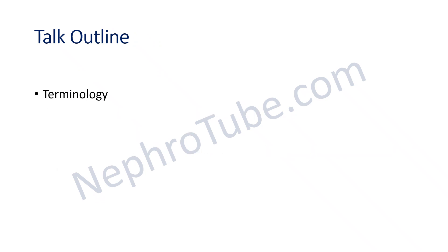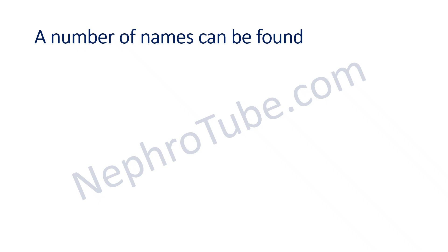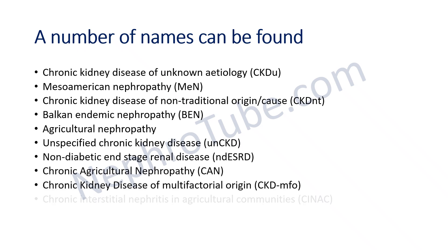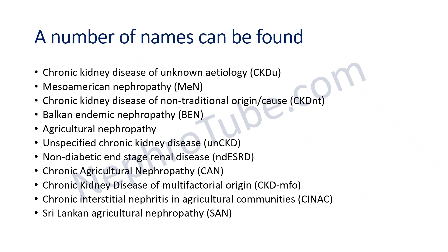Regarding the terminology of CKDU, you can find it described by different names in the literature, all pointing to CKD of unknown etiology or uncertain significance. These include Meso-American nephropathy, Balkan endemic nephropathy, Sri Lankan agricultural nephropathy, chronic agricultural nephropathy — all describing one disease: chronic kidney disease of uncertain etiology.